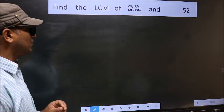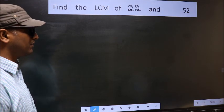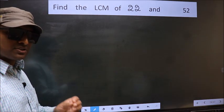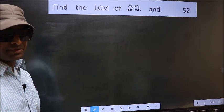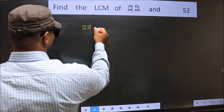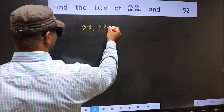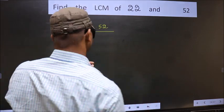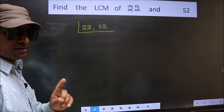Find the LCM of 22 and 52. To find the LCM, first we should frame it in this way: 22, 52. This is our step 1.